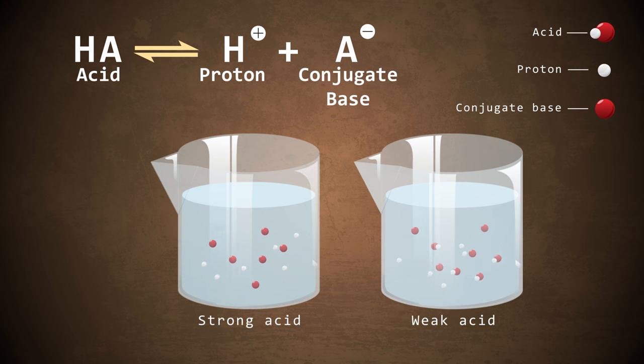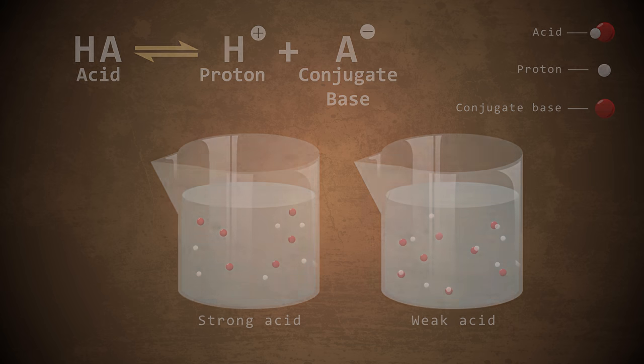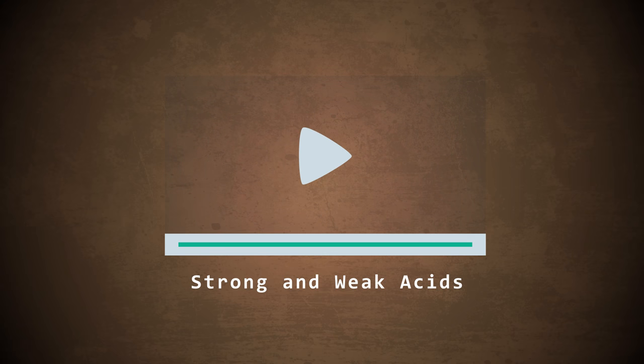An acid is considered to be strong if dissociation nears 100% and weak if dissociation is usually less than 1%. You may want to watch this video on strong and weak acids if you've forgotten the differences for acids.